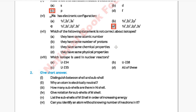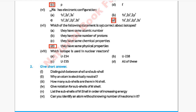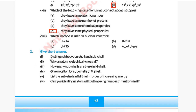Question 7: Which of the following statements is not correct about isotopes? Option A: they have the same atomic number, Option B: they have the same number of protons, Option C: they have the same chemical properties, Option D: they have the same physical properties. The correct answer is Option D — isotopes do not have the same physical properties; the other three options are correct.